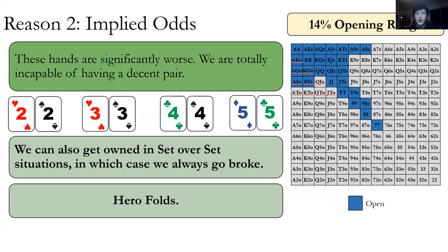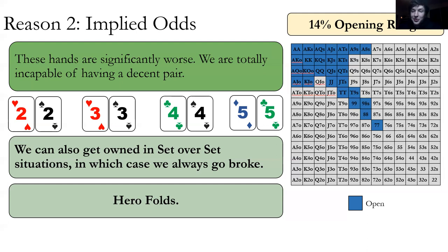Twos through fives — we've reached the cutoff point. They are significantly worse, totally incapable of making a decent pair. We can also get owned by set-over-set situations. It doesn't happen very often, but when it does, we're always going broke. Under the gun has pocket aces through pocket sevens. The probability of flopping a set is about one in nine — let's say one out of a hundred times we both flop sets. When that happens, we lose 200 big blinds, which is minus two big blinds in EV from the set-over-set situation, more likely with these tinier baby sets. So we don't like these — we're going to fold them. Also with four people left to act, these hands cannot defend against aggression or squeezes. If we have pocket jacks and someone behind us raises, we're not always folding. With twos, we have to let go.